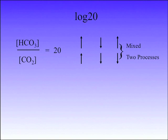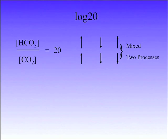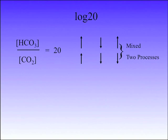Bicarb going up, CO2 going down — mixed process. CO2 going down, bicarb going up — mixed process. If they're ever going in opposite directions, it's always a mixed process, because the body wants them to follow each other. That's what compensation will make it do.